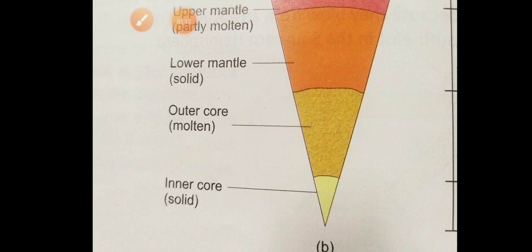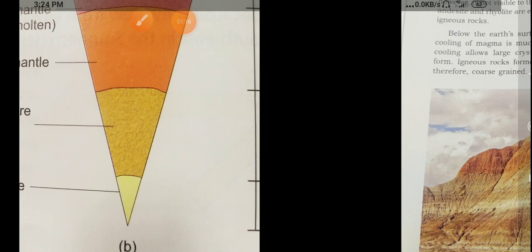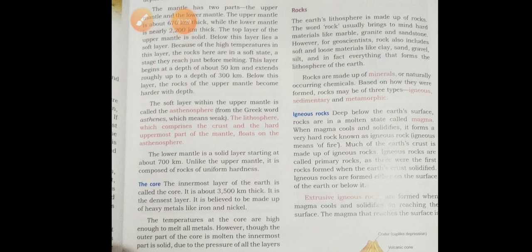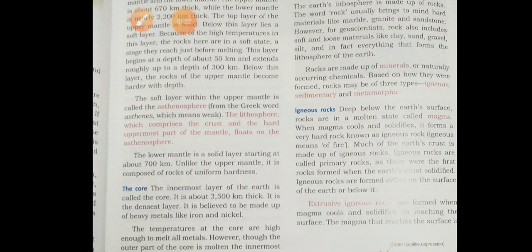And next we can see that the rocks. What are rocks? The earth lithosphere is made up of rocks. And many layers are there. The earth can be divided into different zones or different spheres: lithosphere, hydrosphere, atmosphere and biosphere.